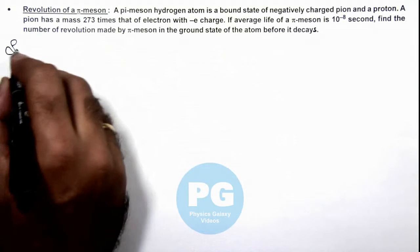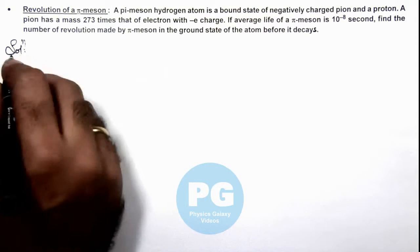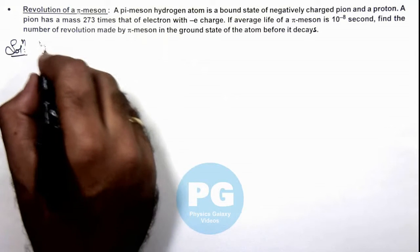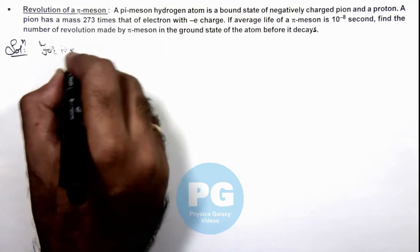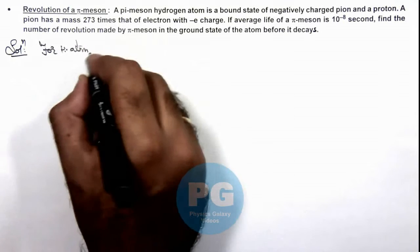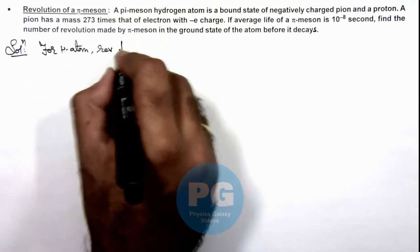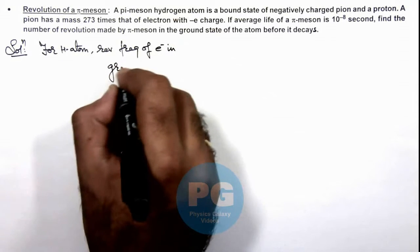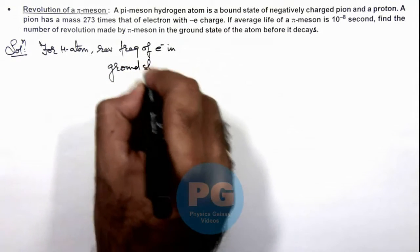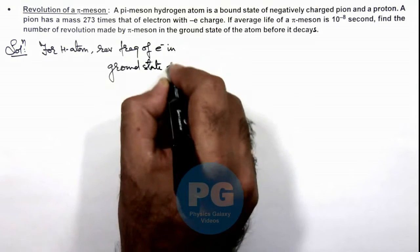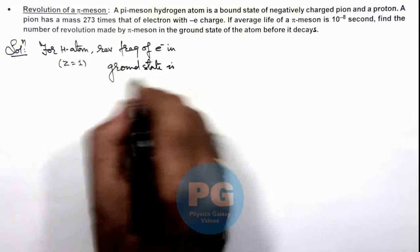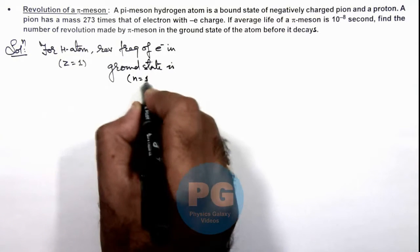Here, for this π-meson hydrogen atom, first we can calculate for hydrogen atom. Revolution frequency of electron in ground state: for hydrogen atom we are using Z = 1 and for ground state we are using n = 1.